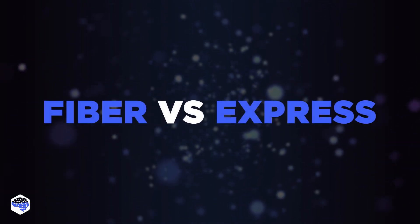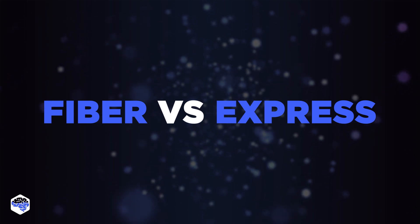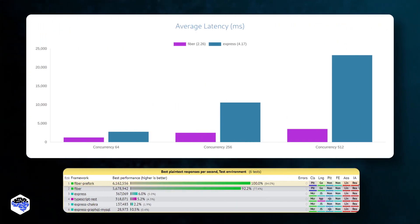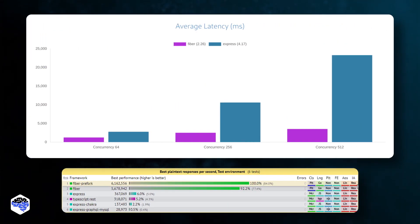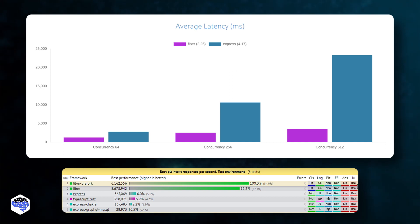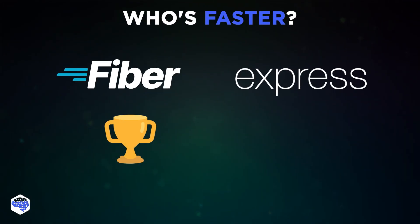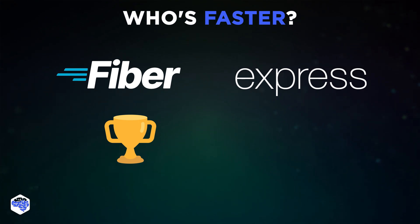To give you an even better understanding of Fiber, let's briefly compare it with the Express framework. First, let's talk about benchmarks. Fiber achieves 6,162,556 responses per second with an average latency of 2.0 milliseconds. Express achieves 367,069 responses per second with an average latency of 354.1 milliseconds. Fiber is much faster than Express because Fiber uses Golang — a compiled language — while Express uses JavaScript, an interpreted language.